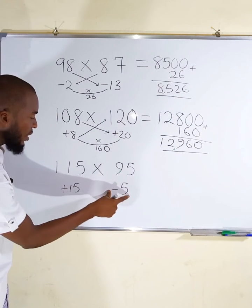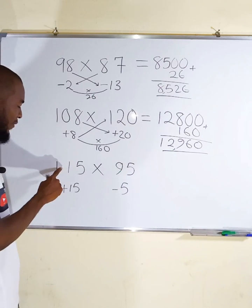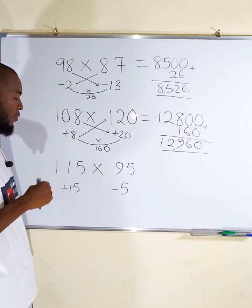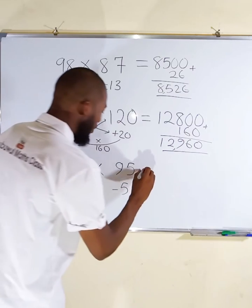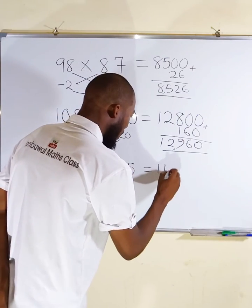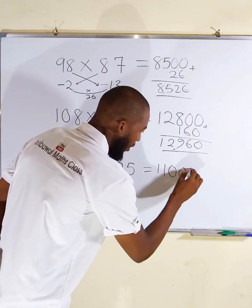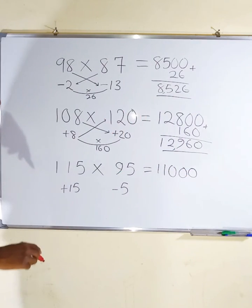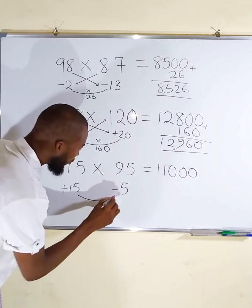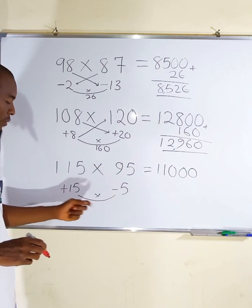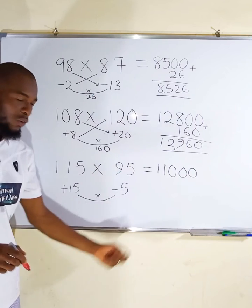We can do it at random if we like. We can add this to this or this to this. If you add 115 to negative 5, it's just like subtracting 5 from 115. This will give us 110. Remember our extra two zeros, add them here.